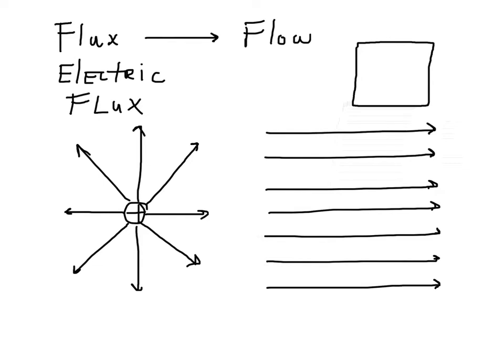So really there are three things: the strength of whatever's fluxing — like falling rain can be light or heavy, sunlight can be behind clouds or direct — the area over which we're collecting the flux, and the position of that area relative to the direction of the flux.